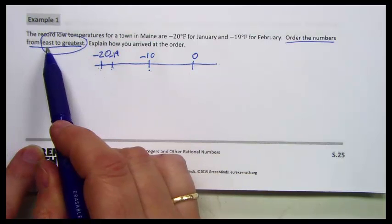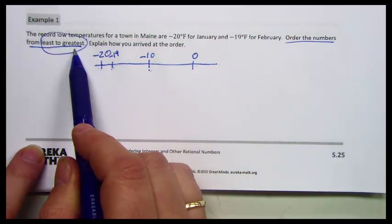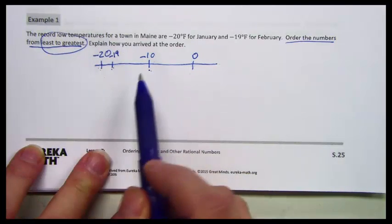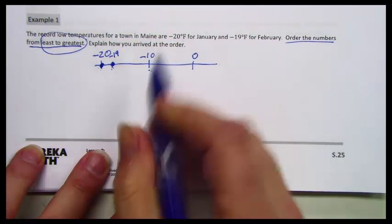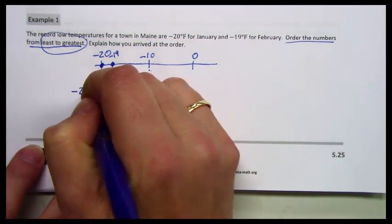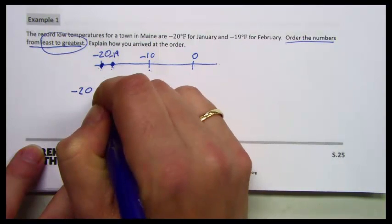In this case, we want it from smallest to biggest. So the smallest number of negative 20 and negative 19 is negative 20, then negative 19.